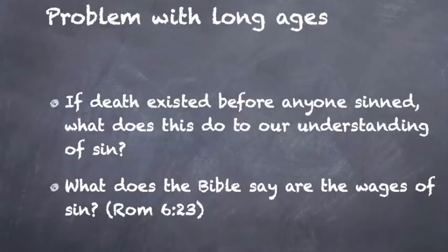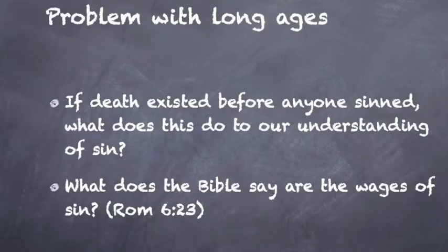So here's my question. If death existed long before sin, what does this mean about sin? What are the wages of sin? The wages of sin is death. But if there's death before sin, what now is the wages of sin? Nothing. Sin is not that bad because there's no penalty for sin. People die now. Animals died before we had sin. So if the wages of sin is death, but death was happening before there was sin, then what's the problem with sin? Is that scary to you?